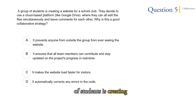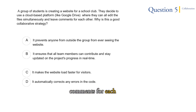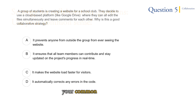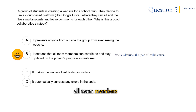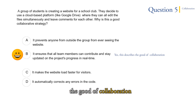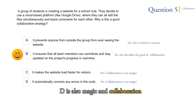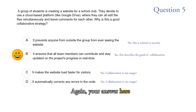Question 5: A group of students is creating a website for a school club. They decide to use something like Google Drive where they can all edit files at the same time and leave comments for each other. Why is this good? B is the obvious choice — ensuring all team members can contribute and stay updated describes exactly what the benefit of collaboration is. A is related to security. C and D are magic, and collaboration is not magic. The answer is B.